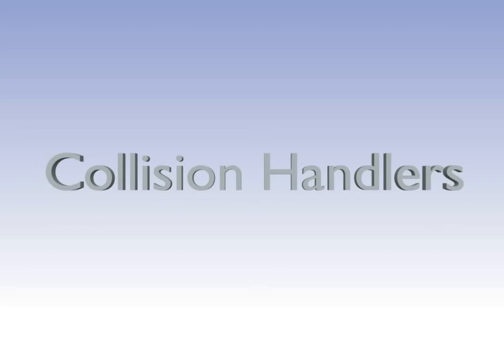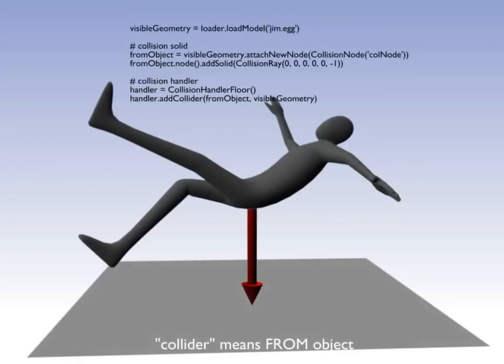Remember I told you that you can use collision systems to prevent objects from going through each other, but also doing something when two objects collide. There are different collision handler types, and they do different things when the solids which are assigned to them collide with each other. Collision handler floor is meant to be used with collision ray or segment. Like I explained above, you'll attach your ray to your player and collide it with the ground. It can also mimic gravity effect.